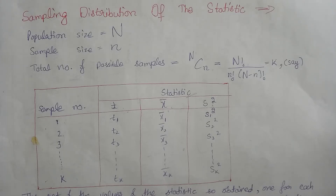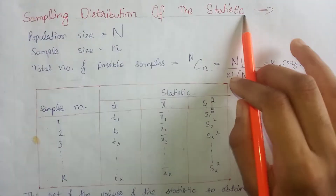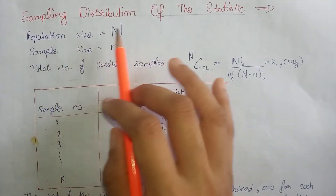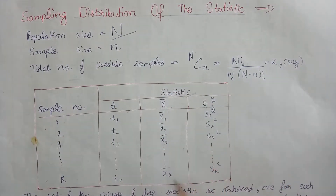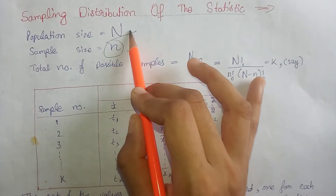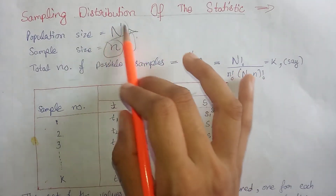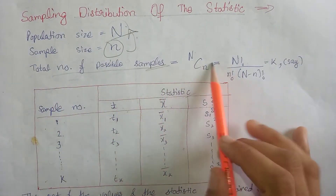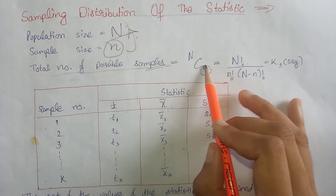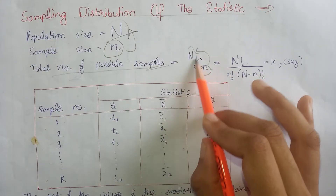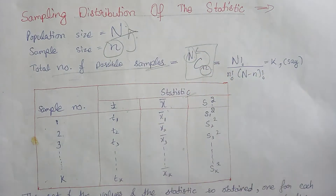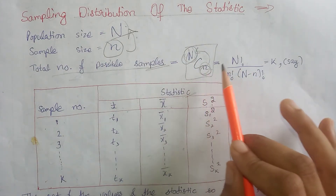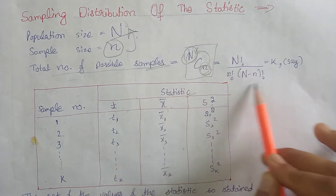Let's study the sampling distribution of statistics. Suppose we have a population of size capital N and we derive a sample of size small n from this population. The total number of possible samples of size small n that can be derived from a population of size capital N is: capital N factorial divided by small n factorial multiplied by capital N minus small n factorial.